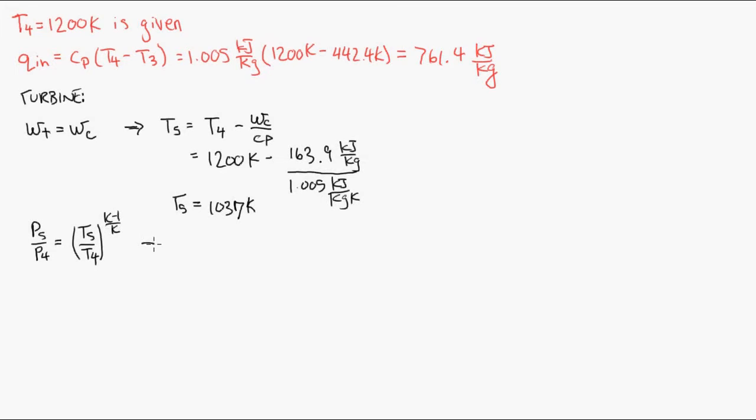Since it's an isentropic process we can use this formula to find the pressure at state five, the turbine exit pressure. Finally the gas is accelerated and expanded out through the nozzle. So we know that P6 is the atmospheric pressure at the altitude we're working at, and that's 55 kilopascals. So we know our pressure ratio. Therefore we can find the exit temperature.